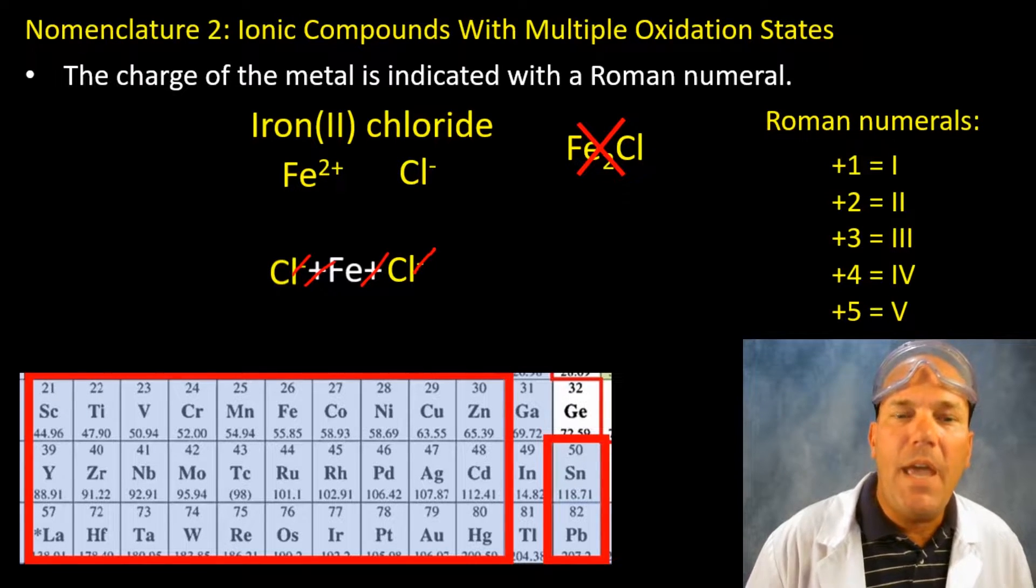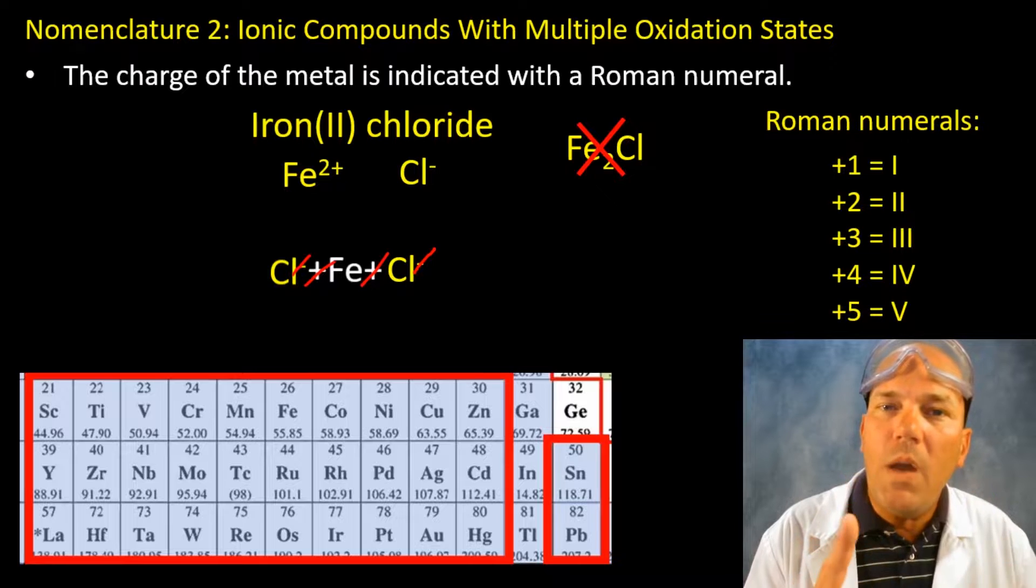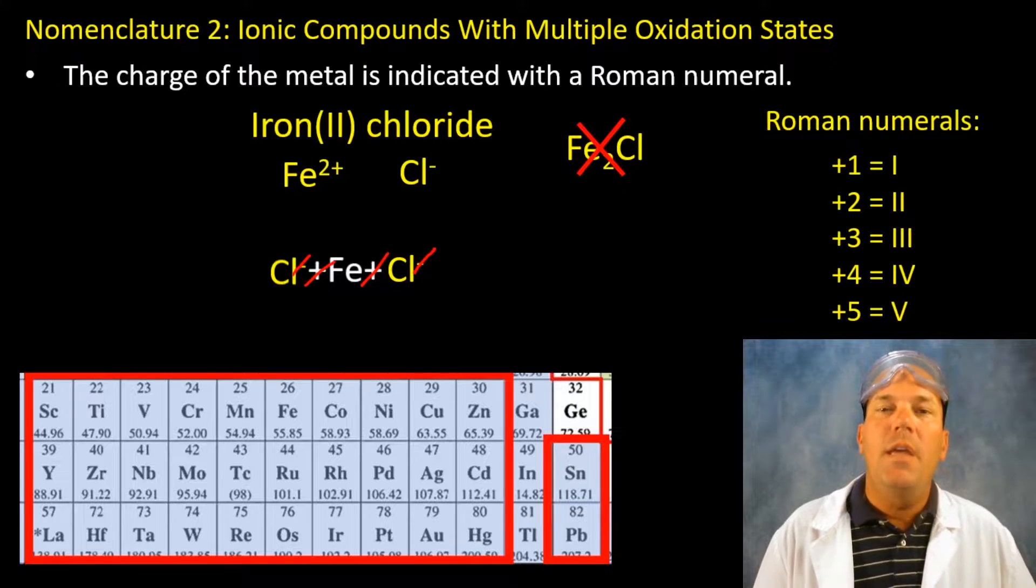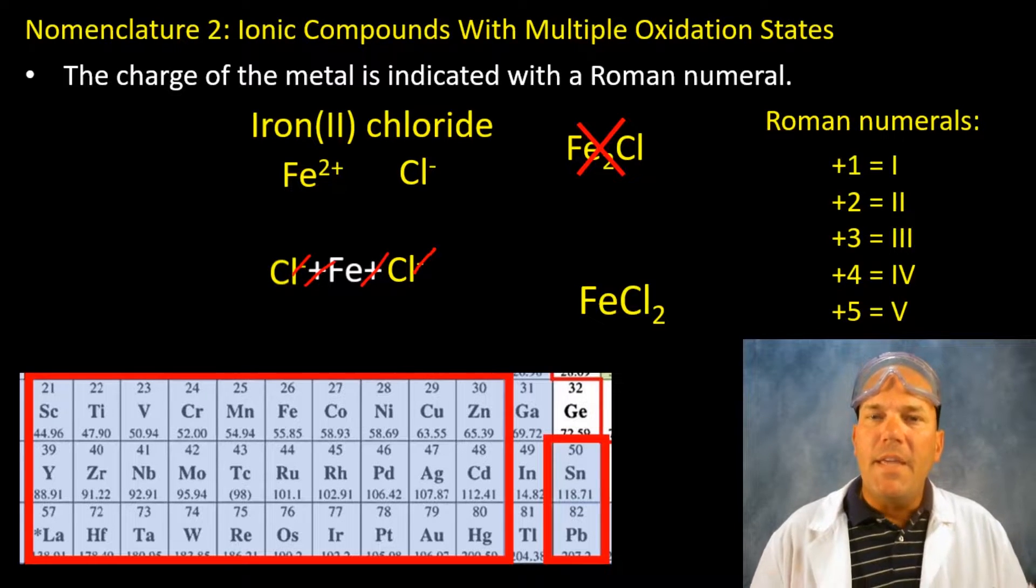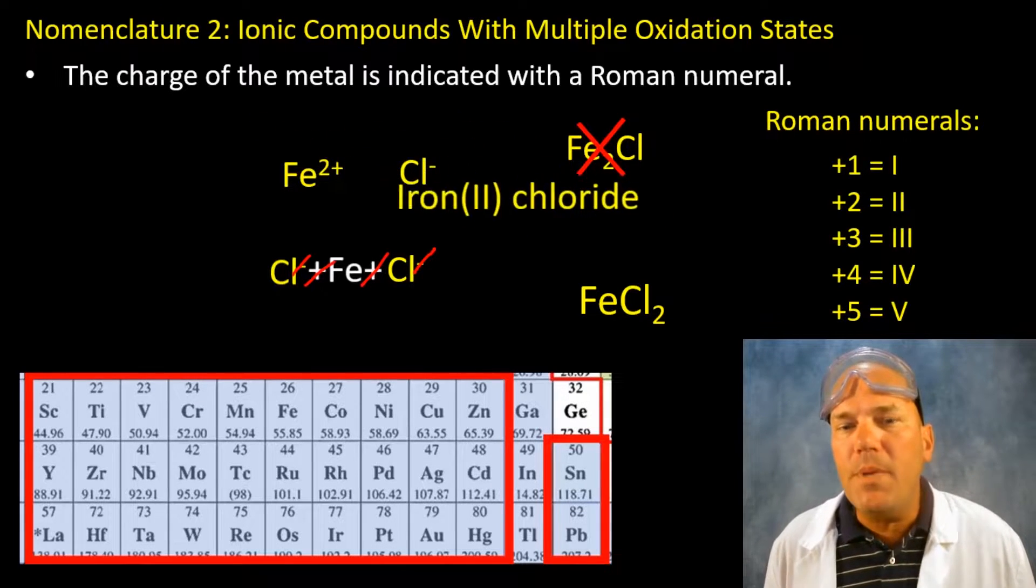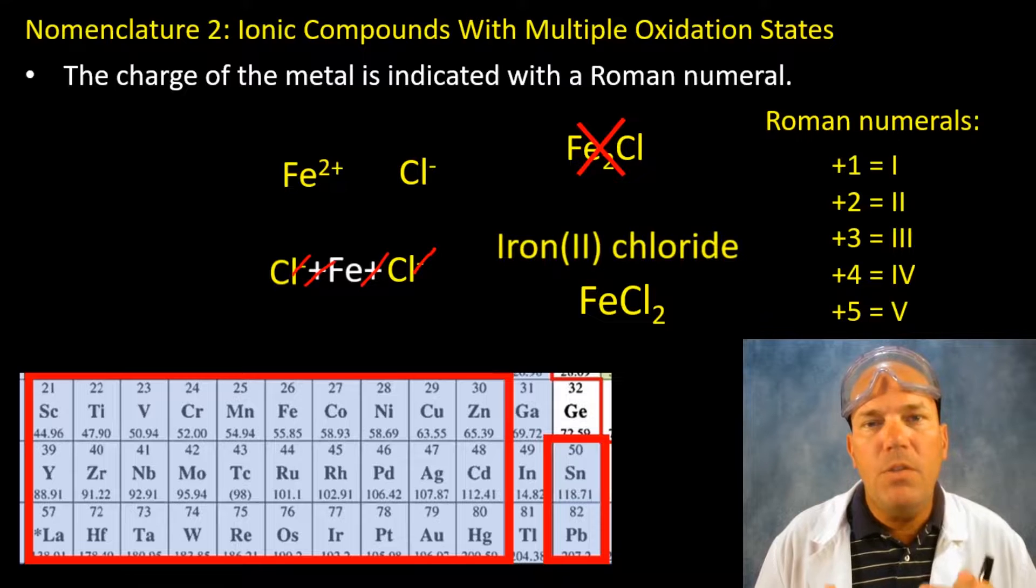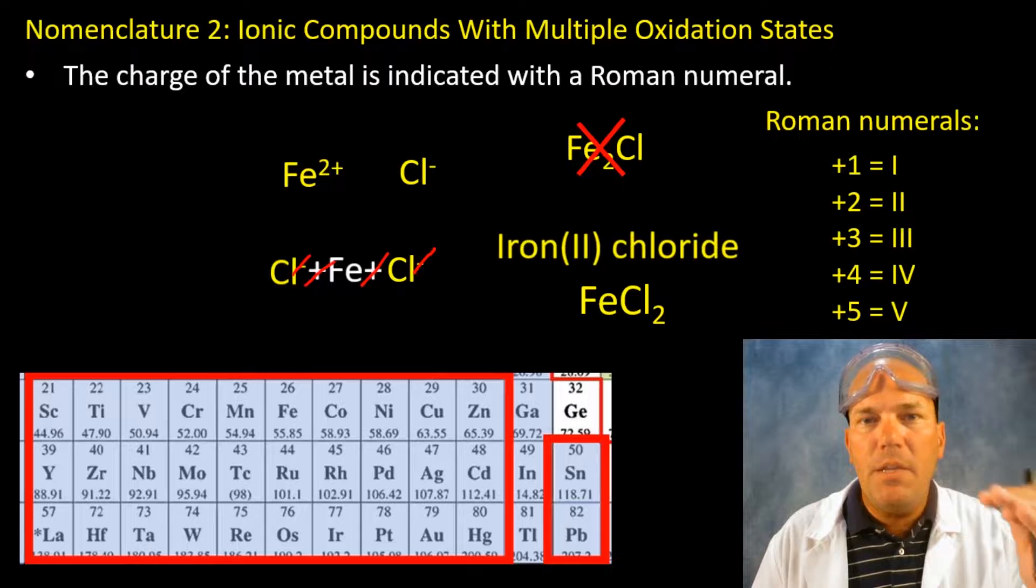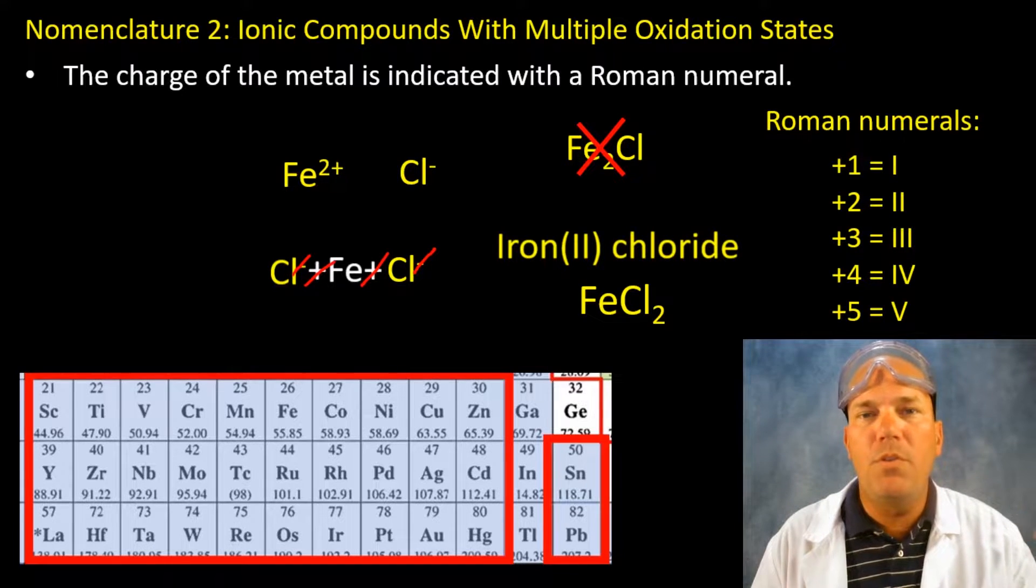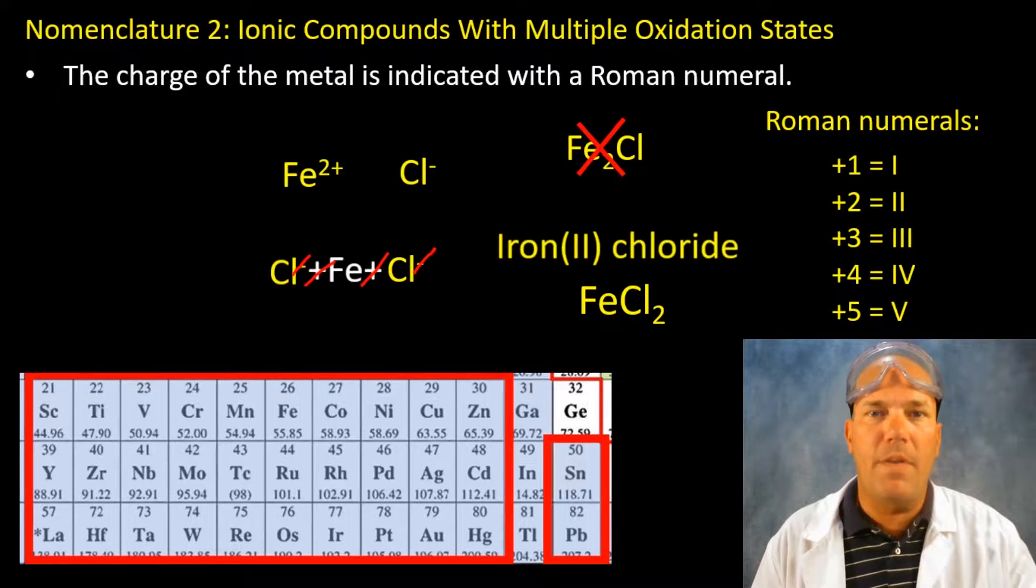Now let's count the number of atoms. There's only one iron and there are two chlorine. This is the correct formula for iron two chloride. The charge is represented by the roman numeral, not the number of atoms.